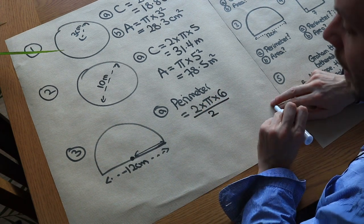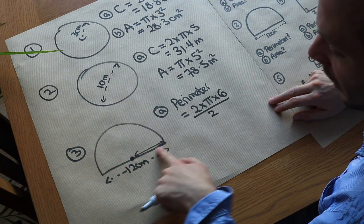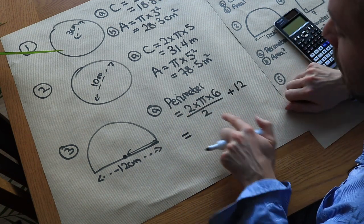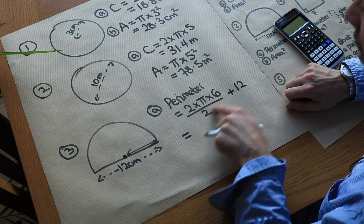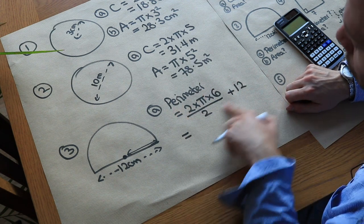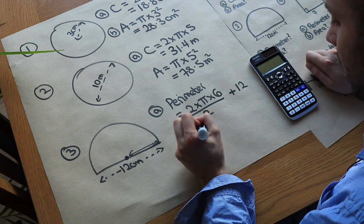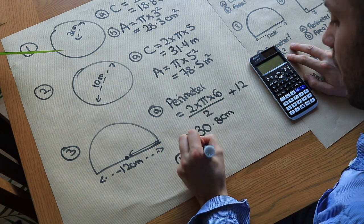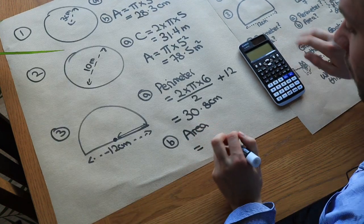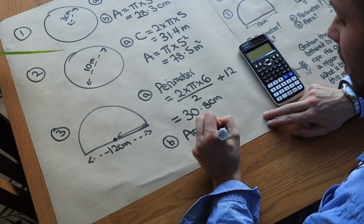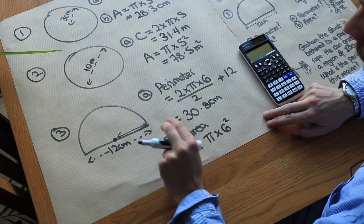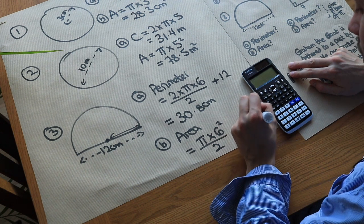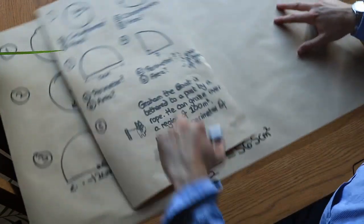That gives the full circumference, but we only want half the circle, so we divide by 2. Then we add the straight edge of 12 to get the full perimeter. Putting it all in the calculator — 2 times π times 6, divided by 2, plus 12 — gives 20.8 centimeters. For the area, it's half of a full circle: π times r squared divided by 2, so π times 6 squared divided by 2. That gives 56.5 centimeters squared.